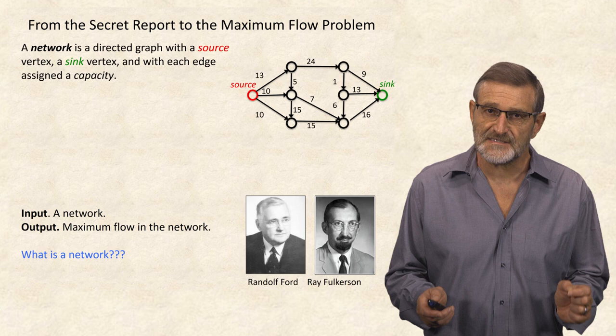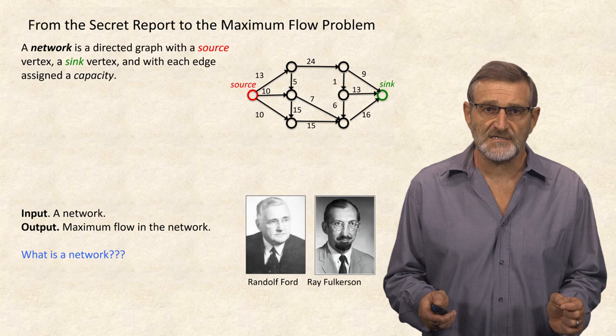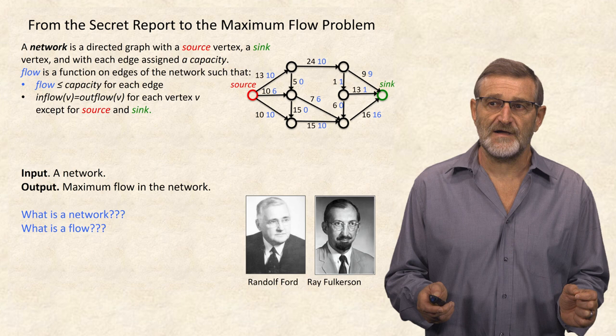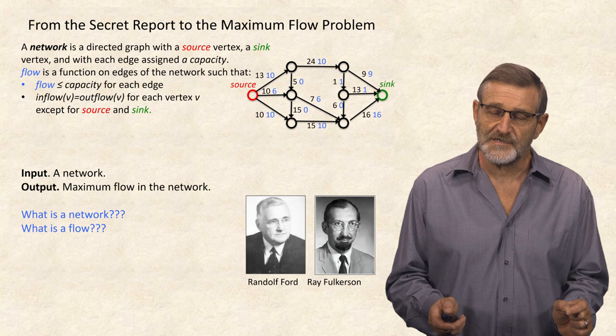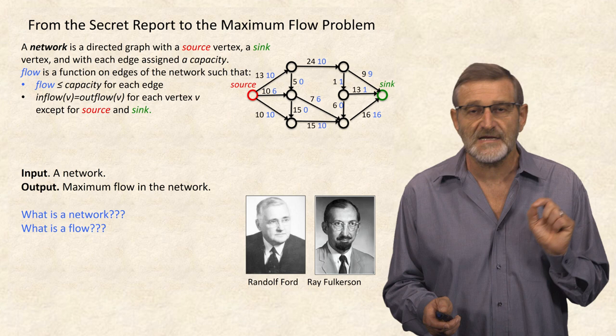But what is a network? Ford and Falkerson define a network as a directed graph with a special source vertex, a special sink vertex, and each edge assigned a capacity. Flow is defined as a function on edges of the network such that flow is less than capacity for each edge, and inflow into each vertex equals outflow from that vertex, for all vertices except the source and sink.